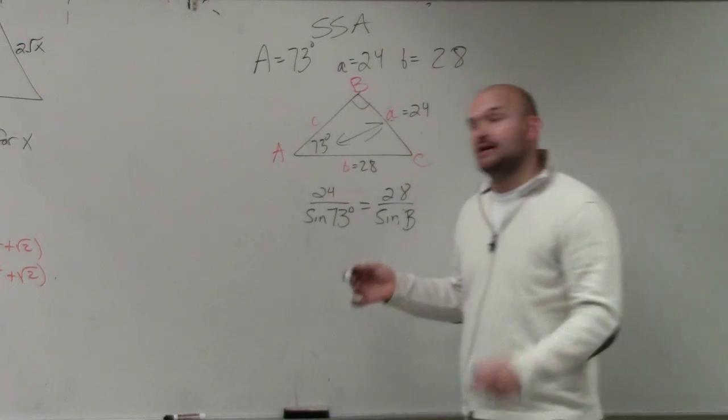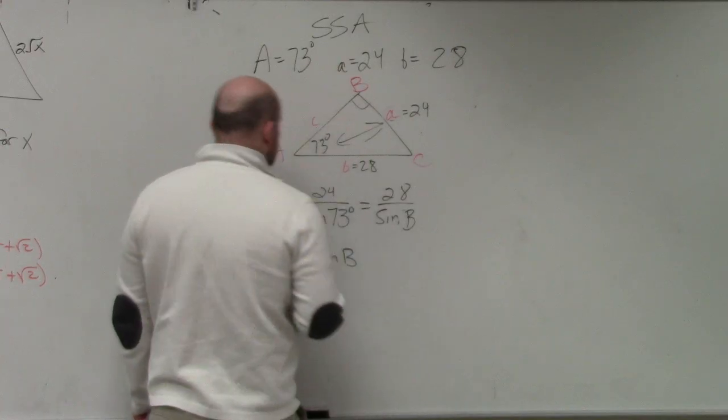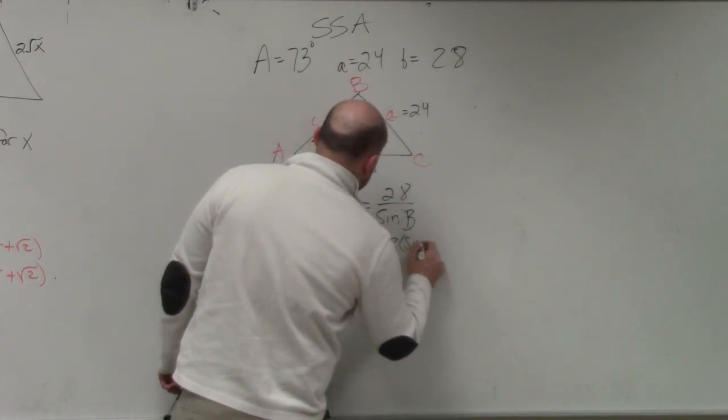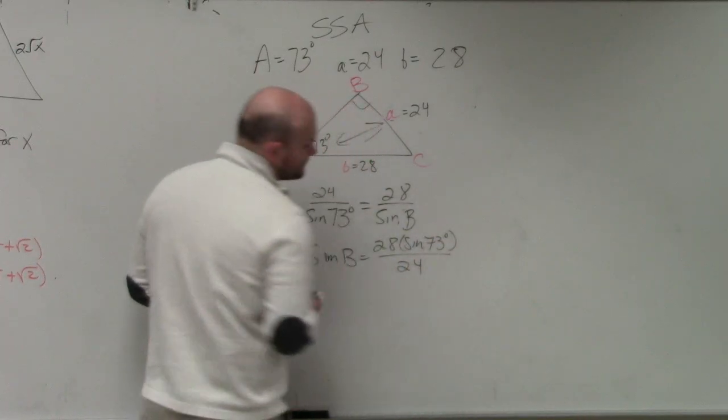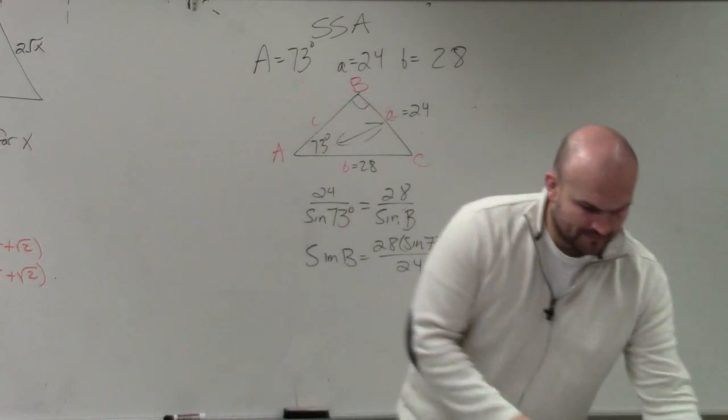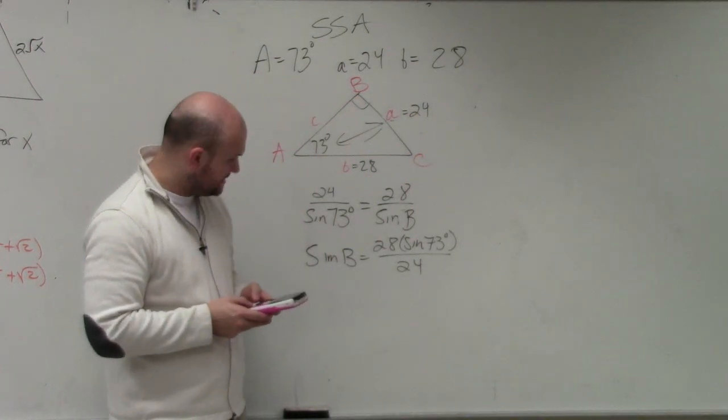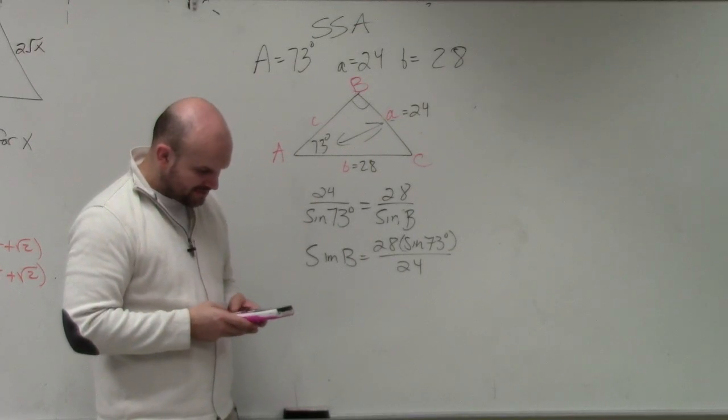Now I solve for B. I'm not going to show all my steps because we should be at this point by now. So sine of B is going to equal 28 times the sine of 73 degrees divided by 24. That's using inverse operations. I'll go ahead and find whatever that value is. So I do 28 times the sine of 73 divided by 24.